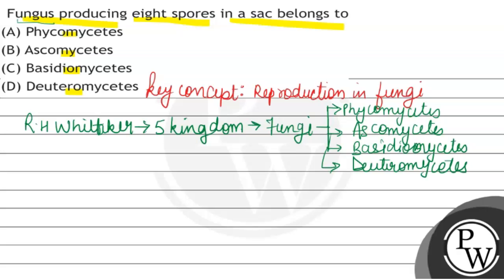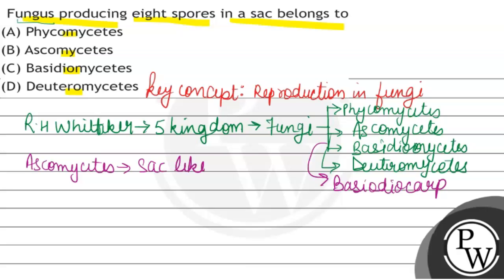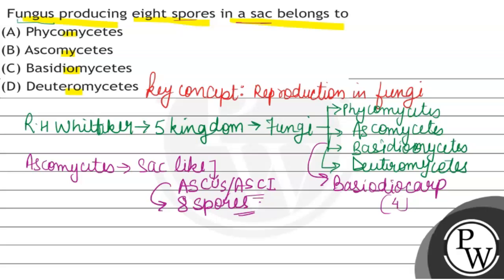Ab yeh sare fungi reproduce karte hain either sexually or asexually. Ascus is the sac, and the 8 spores structure is found in Ascomycetes. Therefore your answer is option B: Ascomycetes. I hope you understood, thank you so much.